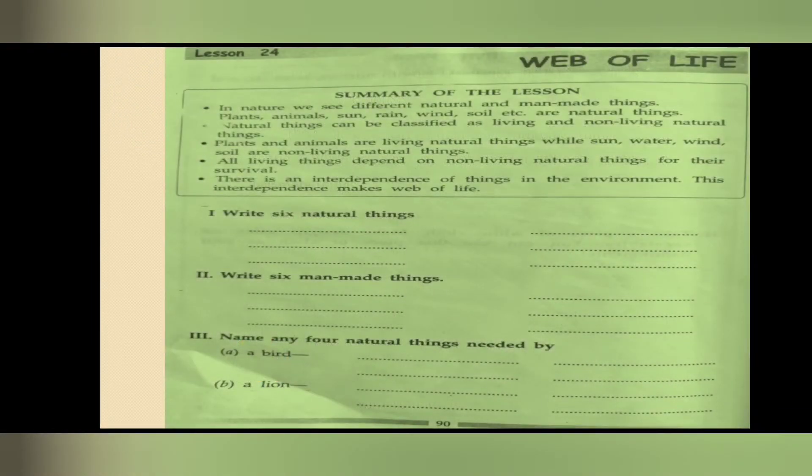Now we have some questions. Let's see the summary of the lesson first. In nature, we see different natural and man-made things. Plants, animals, sun, rain, wind, soil - these are natural things. They can be classified as living and non-living. In our nature, some are living things like plants and animals, and non-living things like sun, water, wind, soil.